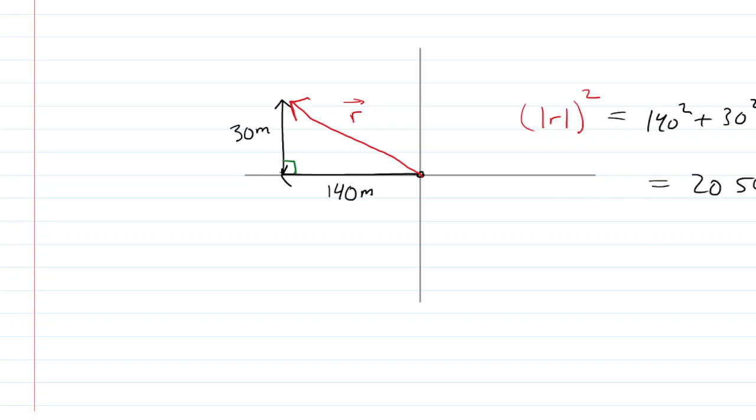And then of course, on the other side, we still have this magnitude of vector r squared, we want to solve for the magnitude of r. So we just take the square root of both sides. And when we do that, we can see that the magnitude of vector r is approximately 143 meters. So this is the correct answer to part c.